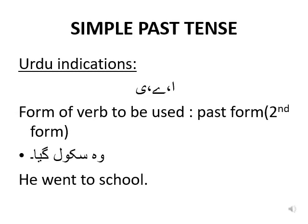The next tense is simple past tense. The Urdu sentences of simple past tense end at alif badi or choti. The verb to be used is the second form of the verb, or the past form. The sentence 'wo skul gaya', ending at alif, can be translated as 'he went to school'. We have used 'went', which is the second form of 'go'.